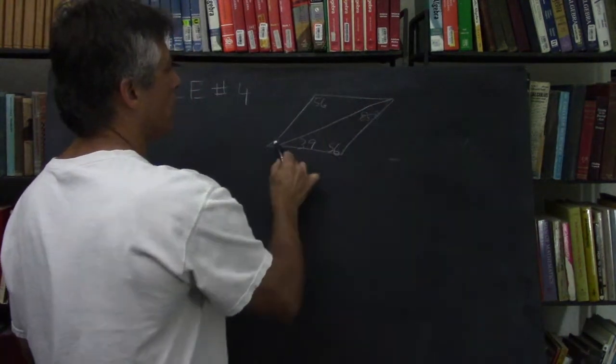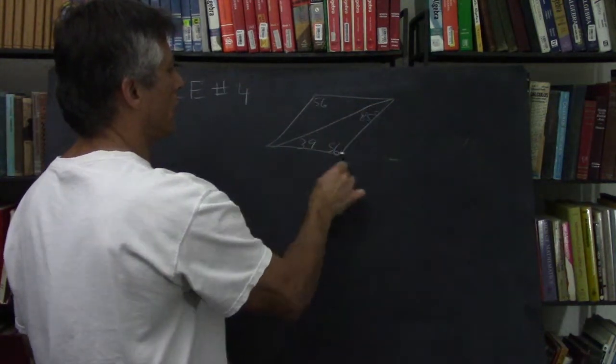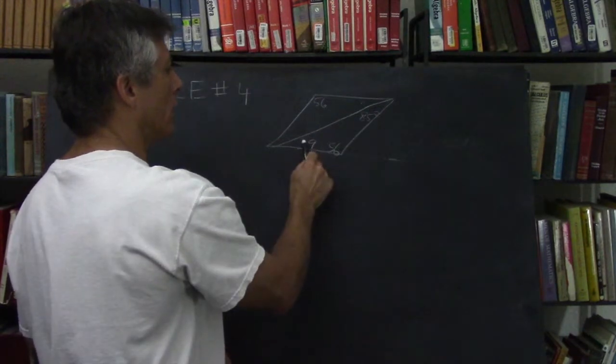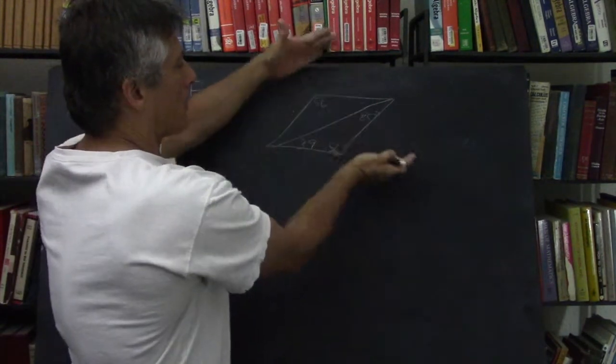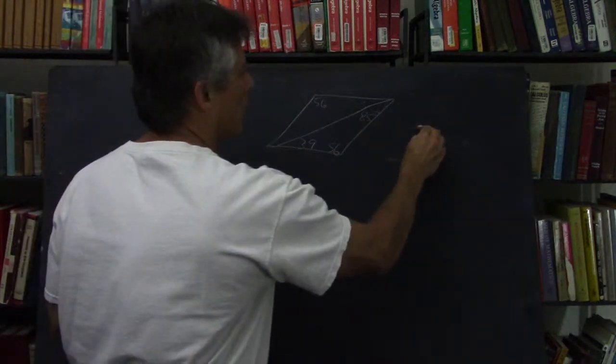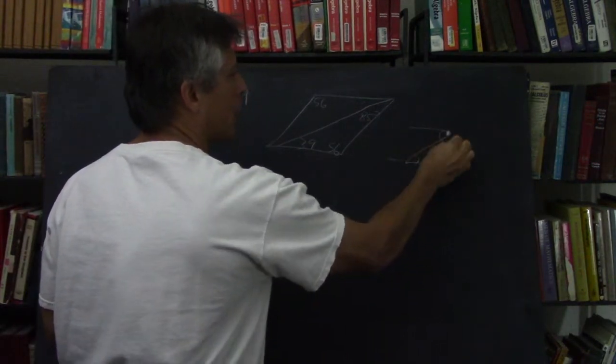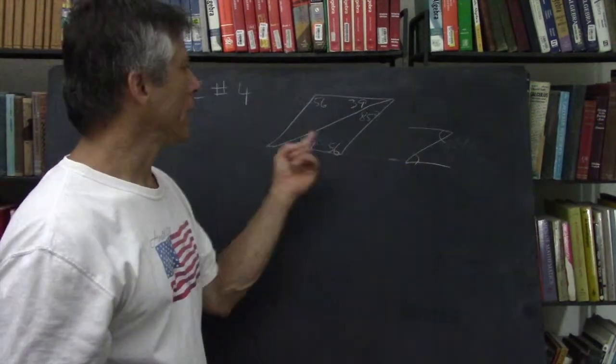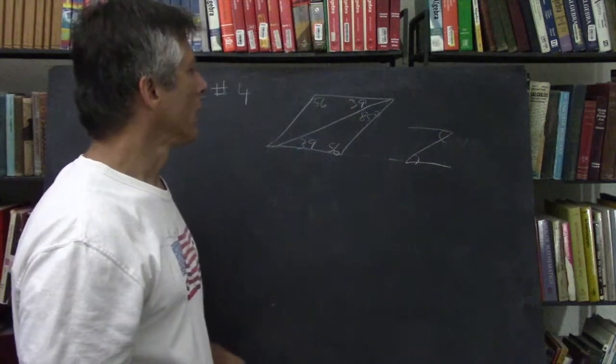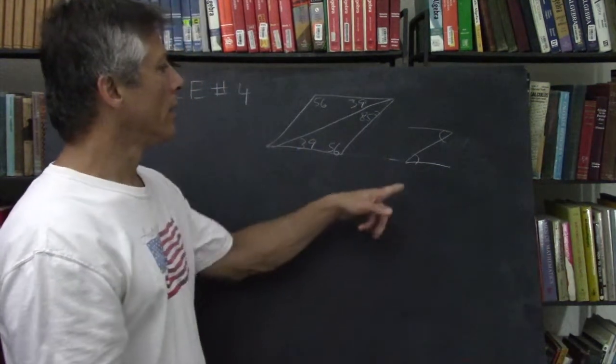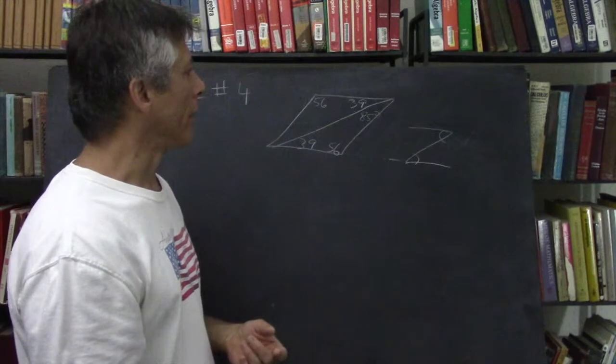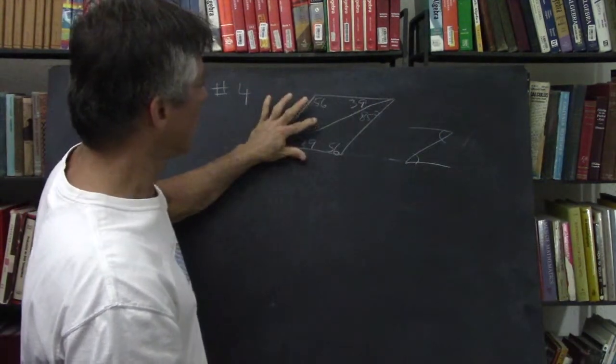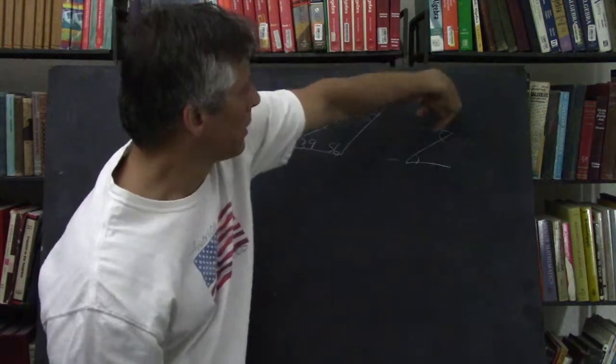But since these are parallel lines and a transversal, these are alternate interior. They're between the parallel lines but on opposite sides of the transversal, like that. If this is 39, that must be 39. So it can help to break it out to make sure you're not messing it up and doing something screwy in your head. Make sure you're actually dealing with alternate interior angles. Because this angle is exactly right here, this one is here, and this one is here.